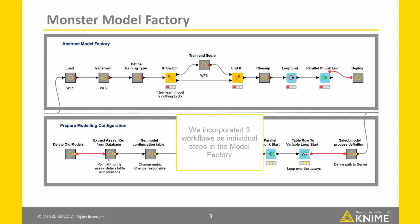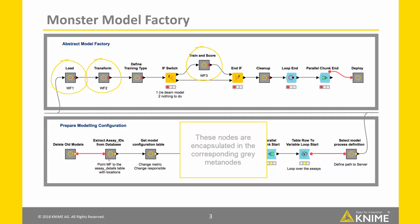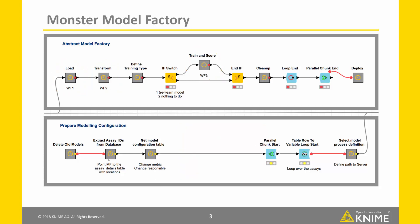We incorporated three workflows as individual steps in the Model Factory: Load, Transform, and Train and Score. The Model Factory triggers the execution of these workflows on KNIME Server via a set of core remote workflow nodes. These nodes are encapsulated in the corresponding gray meta nodes. Let's explore these workflows in detail.